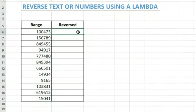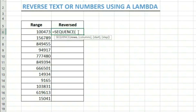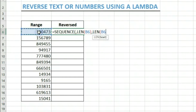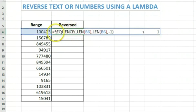In my previous video I showed how to reverse a text string using SEQUENCE, MID, and TEXTJOIN. I'm not going to explain those functions here — I'll leave a link in the description so you can watch that. We'll now create that formula first before converting it to a lambda. We use SEQUENCE where the rows equals the length of the text, the start equals the length, and the step is minus one — giving us a descending sequence.